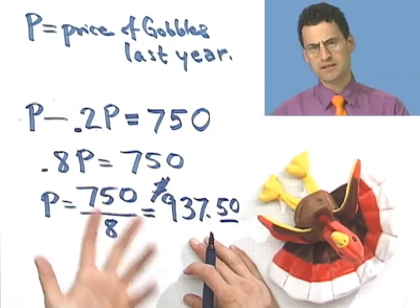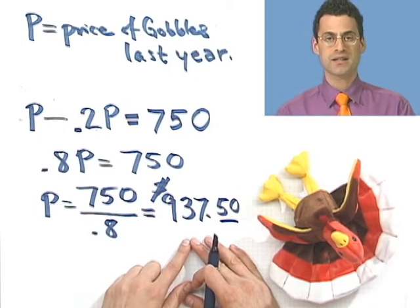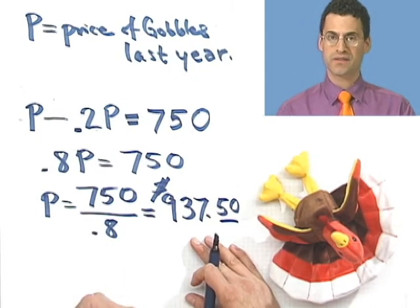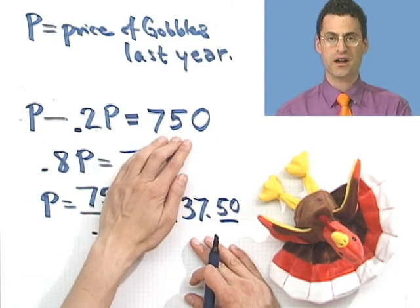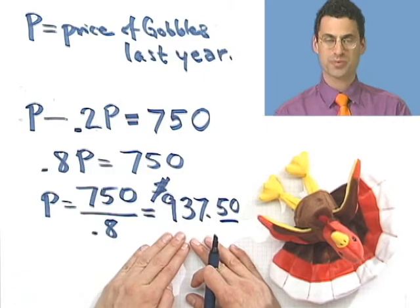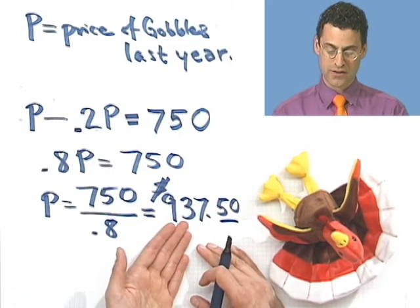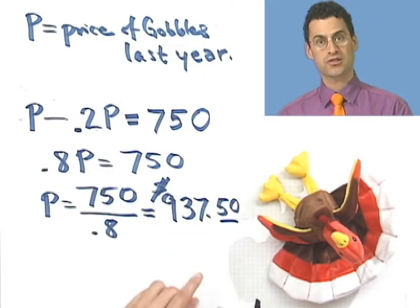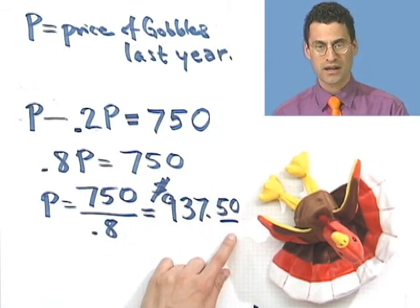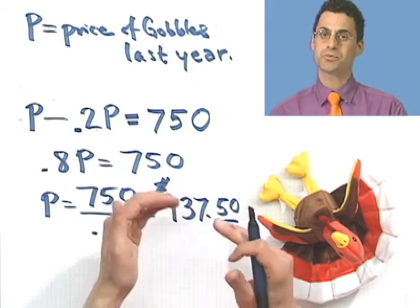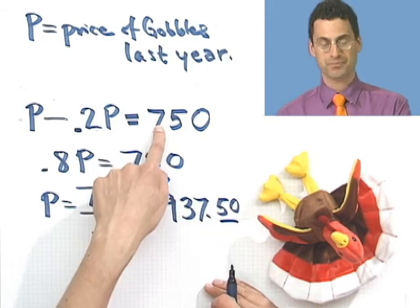Does that answer at least sound reasonably reasonable? The price last year should be higher than this year's price because remember, this year we had a fall in price. So the $750 is this year's price, and last year's price should be higher — and that's at least the number we're getting: $937.50. You can check this by taking 20% of $937.50 and subtracting it — you should get $750. So when you have a price drop or a price increase by a certain amount, you either add or subtract the right percentage, and that's it.